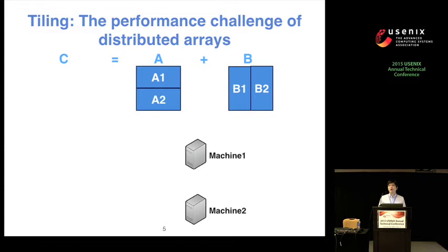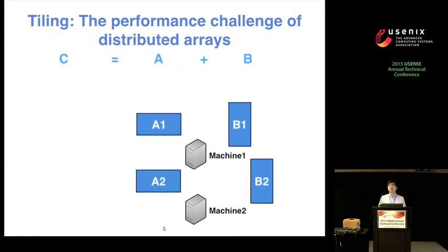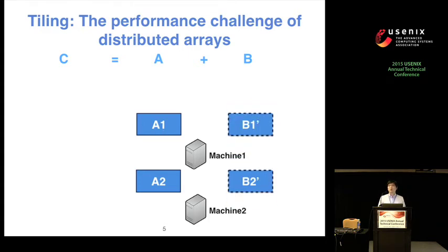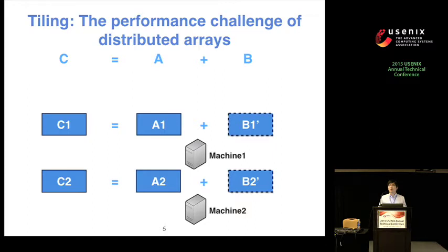In this case, B is divided along columns. After distributing them to both machines, we find that both machines cannot do the computation locally. Instead, each machine needs to transmit a portion of B to another machine to get the appropriate data for computation. This requires additional network transmission and slows down performance. So it is very important to choose the correct tiling for arrays.